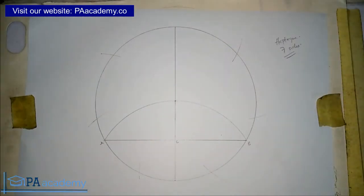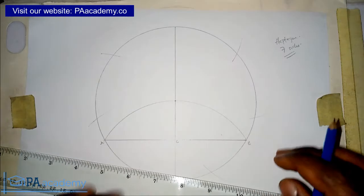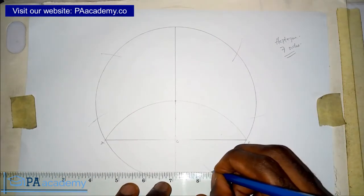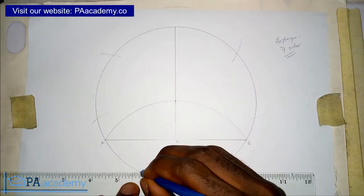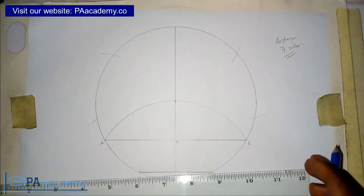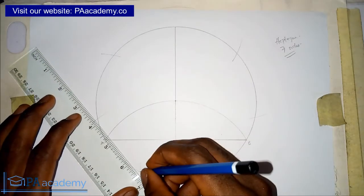We are going to mark one, two, three, four, five, six. Now those points I've just marked represent the sides of the heptagon. What you are going to do is you are going to join them together. You bring in your ruler and then you join those points together. I'm going to be making this bold because that's what we actually need, the heptagon itself.